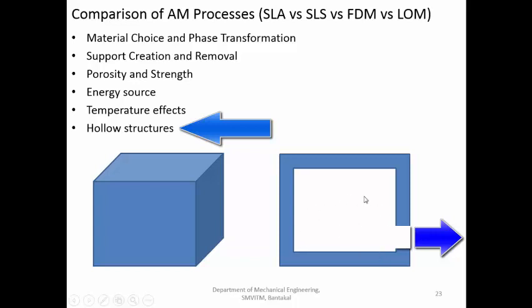These are the key parameters for comparing different additive manufacturing processes. Regarding surface roughness, SLA gives the best surface finish, followed by SLS, then FDM, and finally LOM. This concludes the broad comparison of the four major additive manufacturing processes.